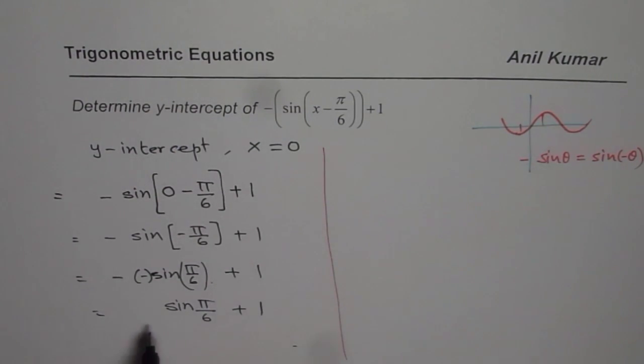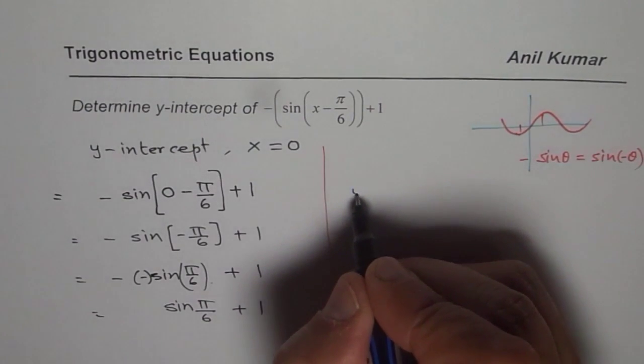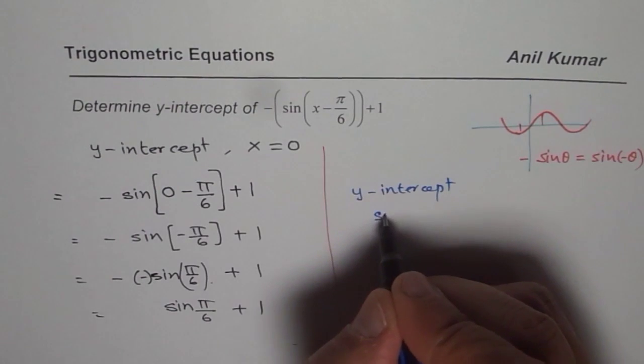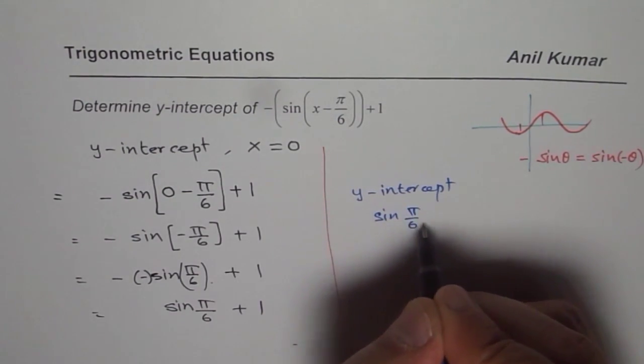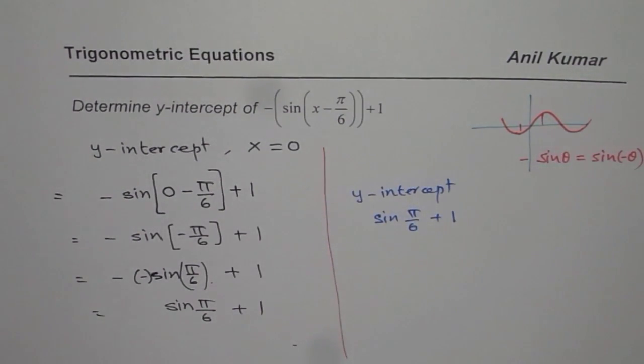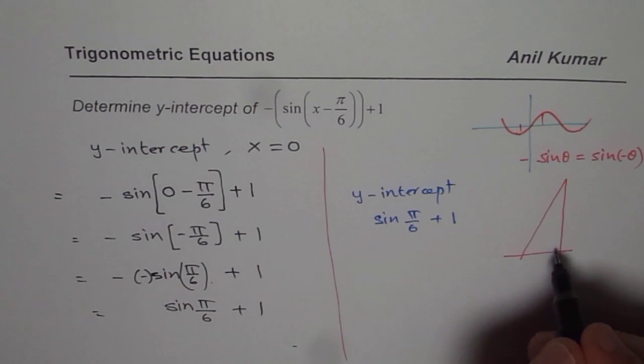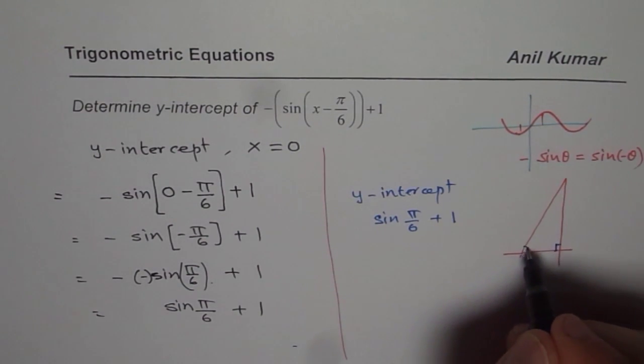The value we have to calculate is the y-intercept at sine π/6 plus 1. Now what is sine π/6? We can use a calculator at this stage to find sine π/6, or I prefer to use these special triangles.